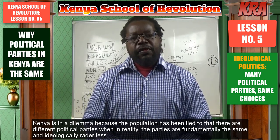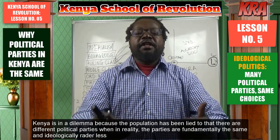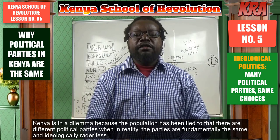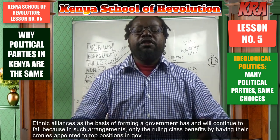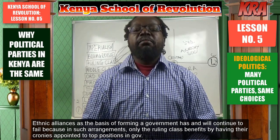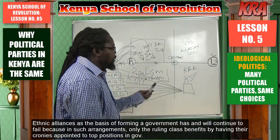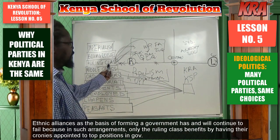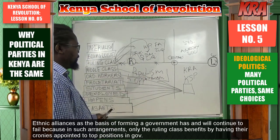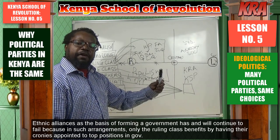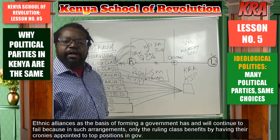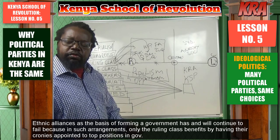We have been lied to that we have different ideas represented by these different parties, but the truth is we have ethnic chieftains fighting for their own individual interests using ethnic parties while at the same time projecting these parties as mass parties. When these parties form ethnic alliances, led by the ruling class with different party names, they form alliances — they call it NASA — they get people to elect them to parliament, and then they begin to practice the same ethnicity in government. This is what we are saying.